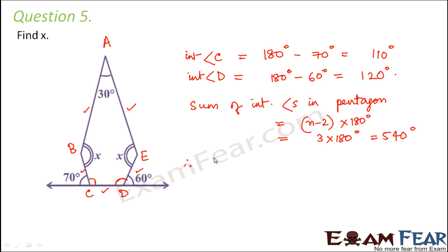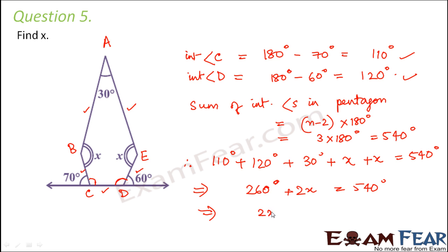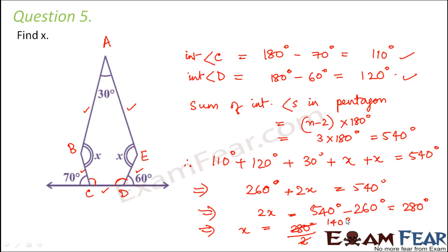So all the internal angles will add up. Angle C plus angle D plus angle A (which is 30 degrees) plus x (angle B) plus x (angle E) equals 540 degrees. So 110 plus 120 plus 30 comes out to be 260 degrees, plus 2x equals 540 degrees. Therefore 2x equals 540 minus 260, which is 280 degrees, and x equals 280 divided by 2. So x equals 140 degrees.